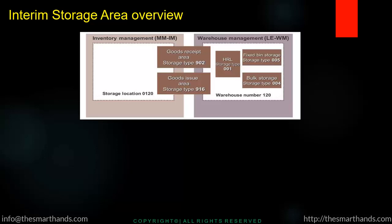The interim storage area is linked to both the goods receipt area and the goods issue area, and uses a different storage type known as an interim storage type. The goods receipt area storage type is 902 — immediately after receiving the goods, they will be stored temporarily there and then moved to their final destination. Similarly for goods issue, the system moves goods to a temporary area, for example storage type 906, before the goods issue process completes.